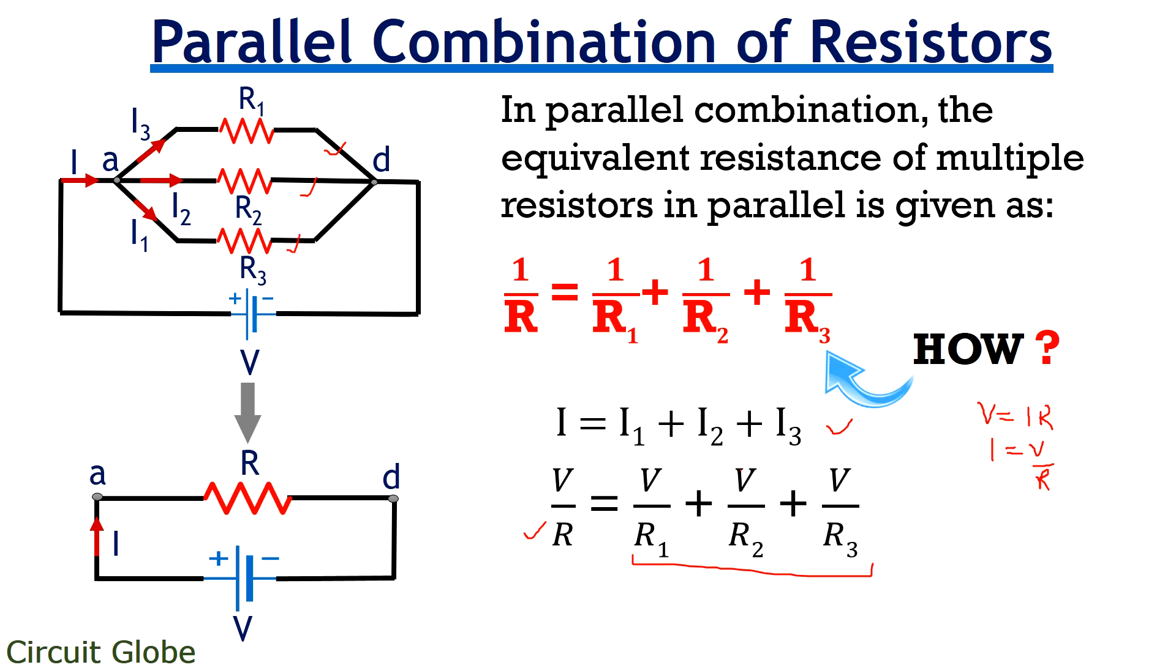As the voltage and parallel combination is same, so different current flowing through each branch will depend on different value of resistances present in that particular branch. On simplifying, we will get V upon R is equal to V of 1 upon R1 plus 1 upon R2 plus 1 upon R3. And cancelling the common terms, we will get 1 upon R is equal to 1 upon R1 plus 1 upon R2 plus 1 upon R3.